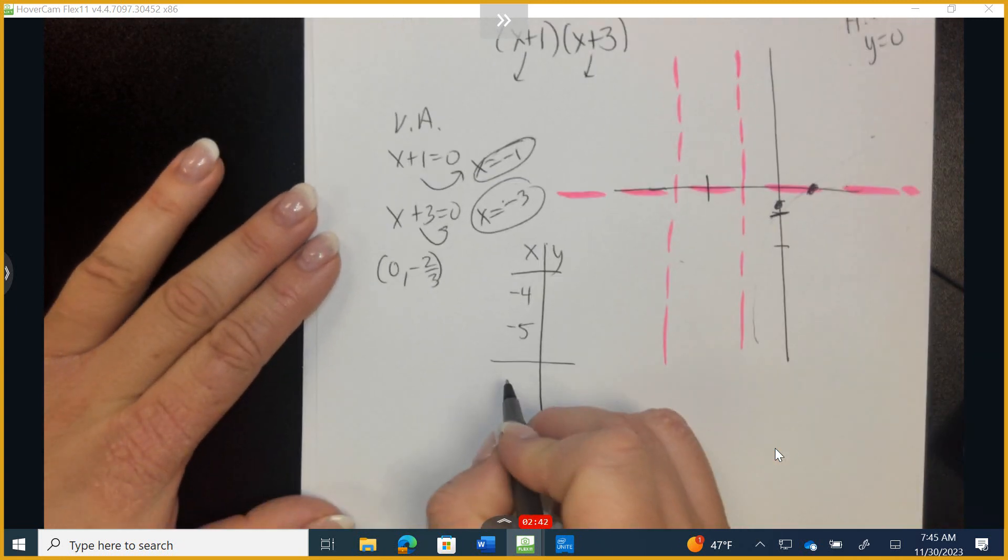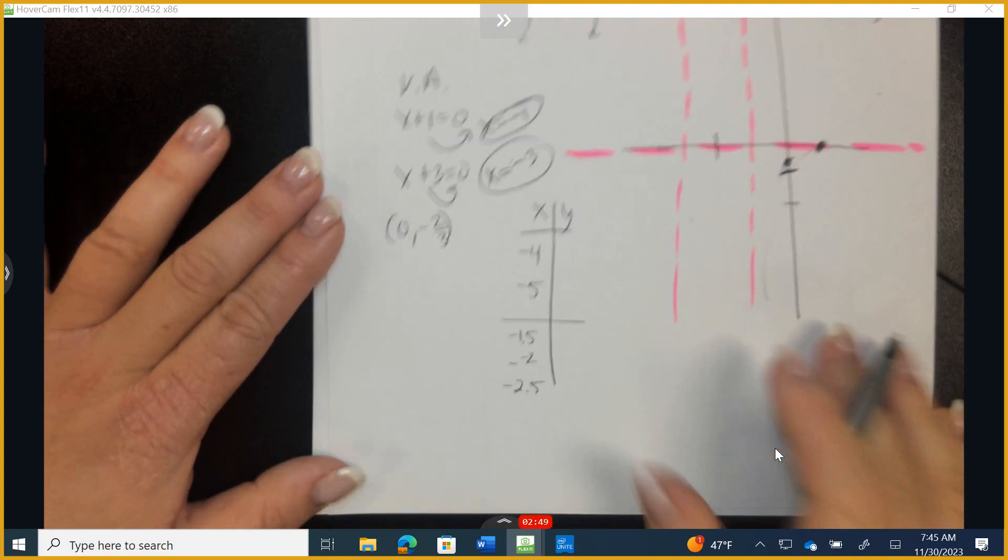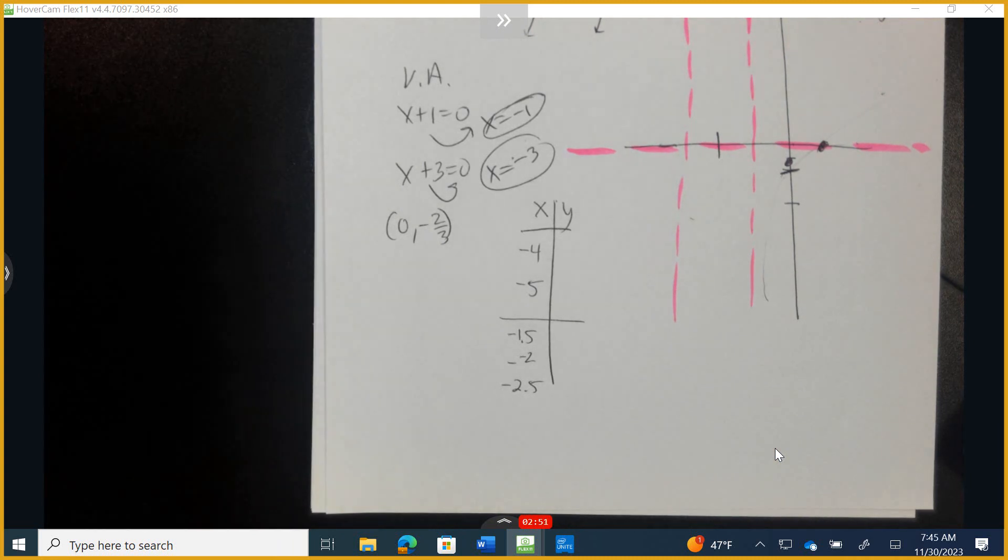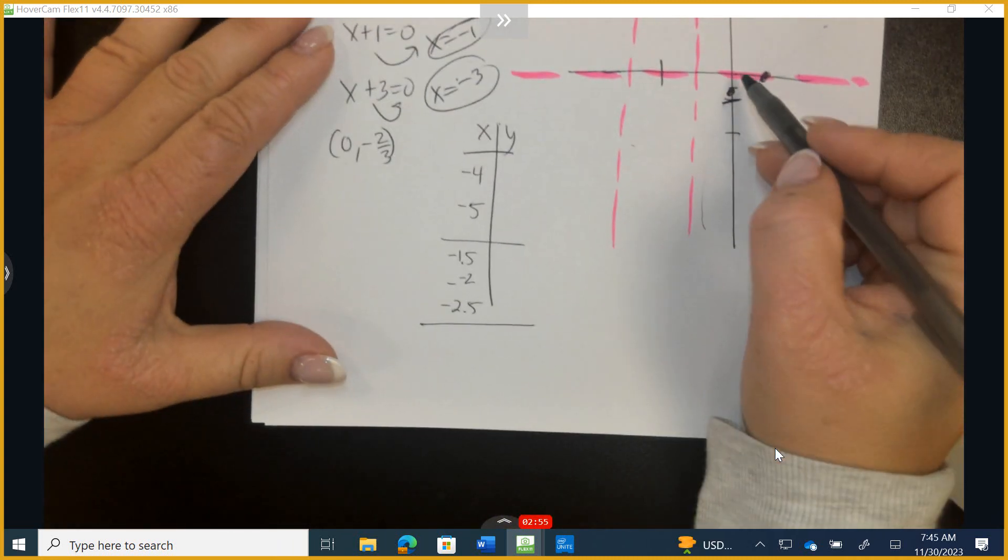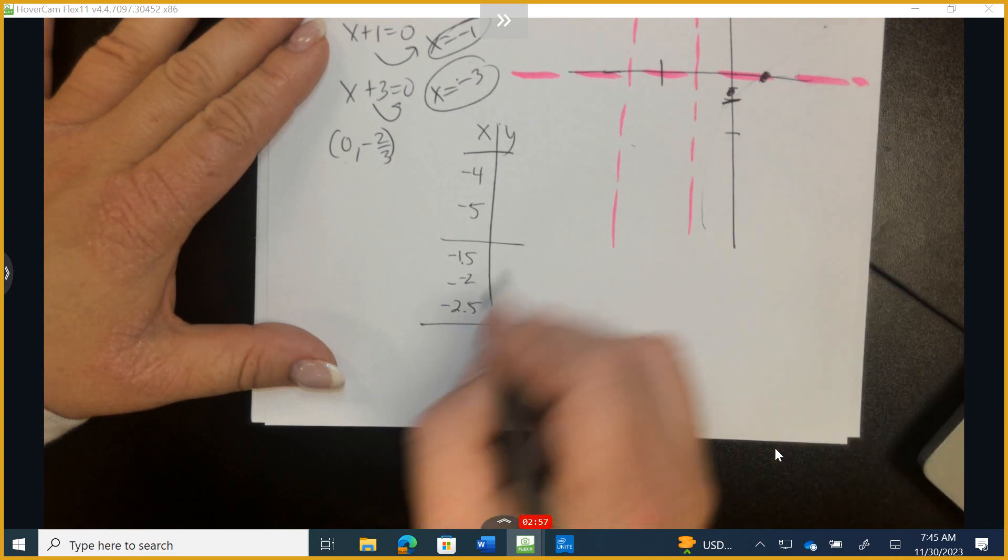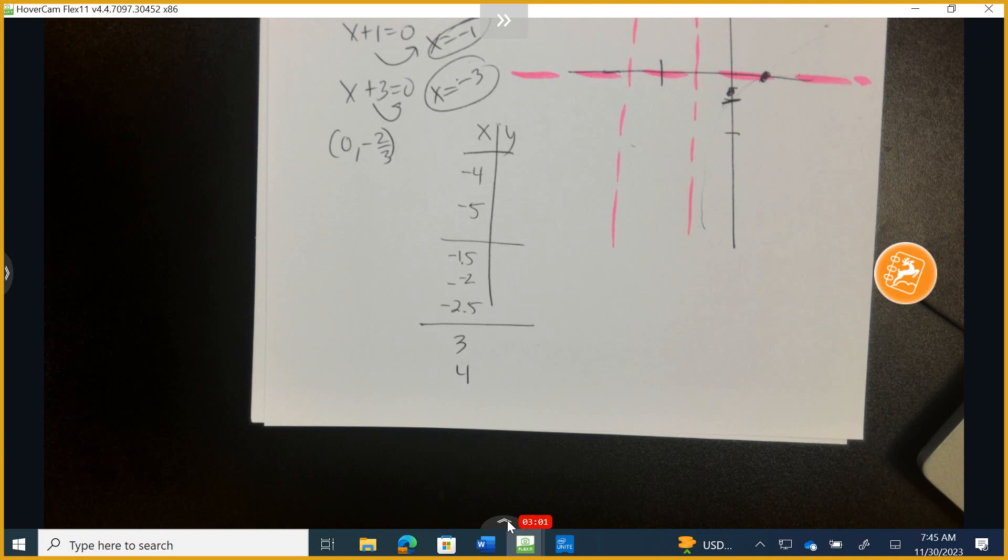If this is -1, I want -1.5, -2, and -2.5 to know exactly what this looks like. This side of the classroom, I want you to determine 3 and 4 for me. So I'm going to put it on pause. Please figure those out.